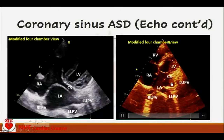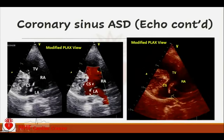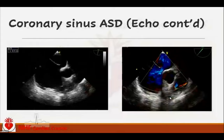Fortunately, a communication was found between the coronary sinus and the left atrium. Additionally, the left-sided upper pulmonary vein was draining into the coronary sinus rather than the left atrium, with left-to-right shunting between the left atrium and coronary sinus. A 2D gap was identified in the proximal portion of the coronary sinus.